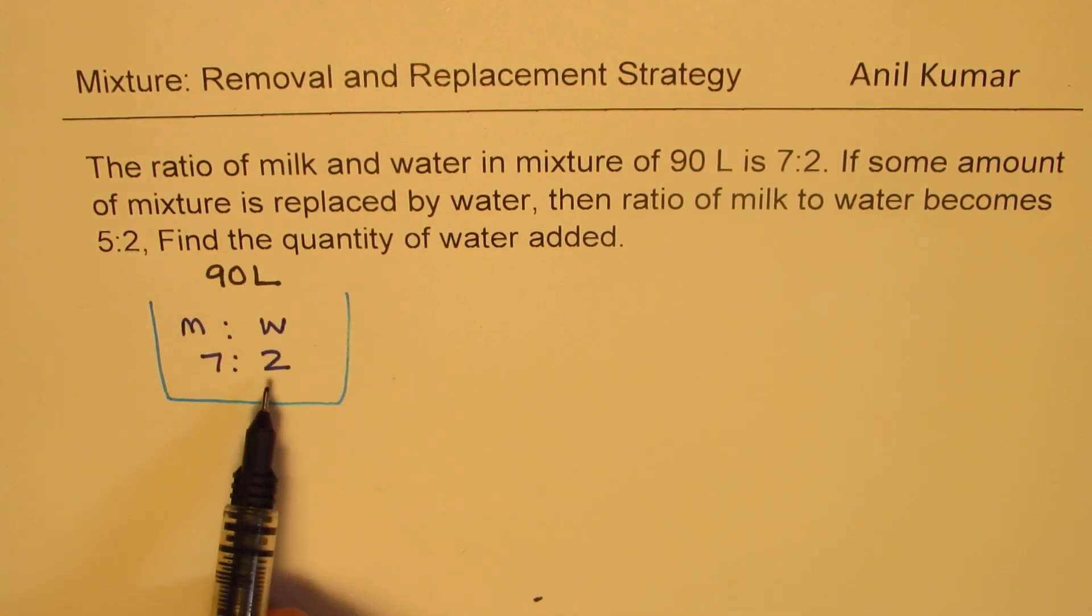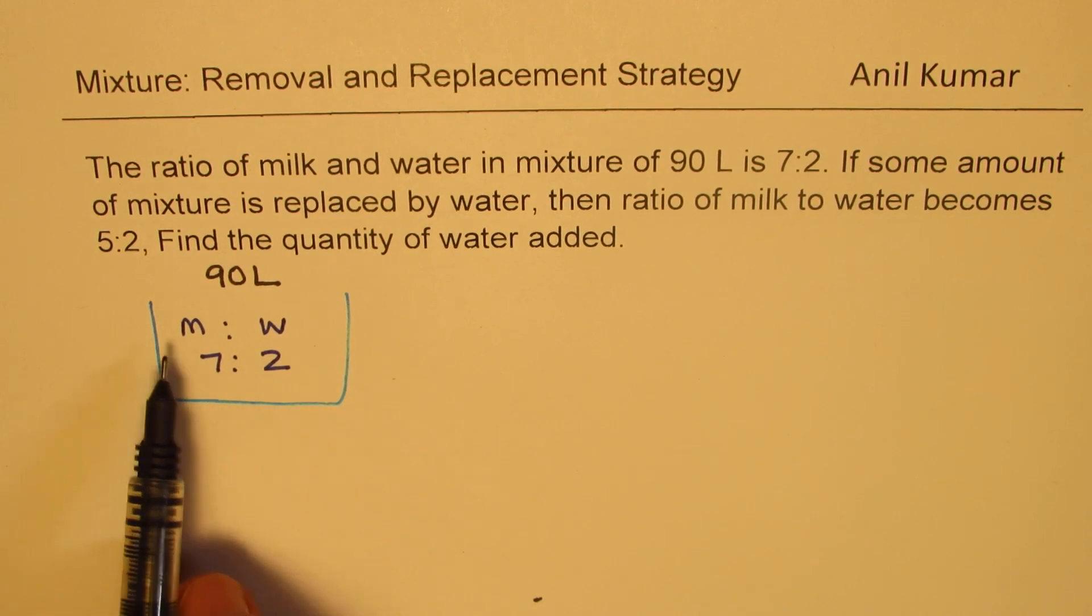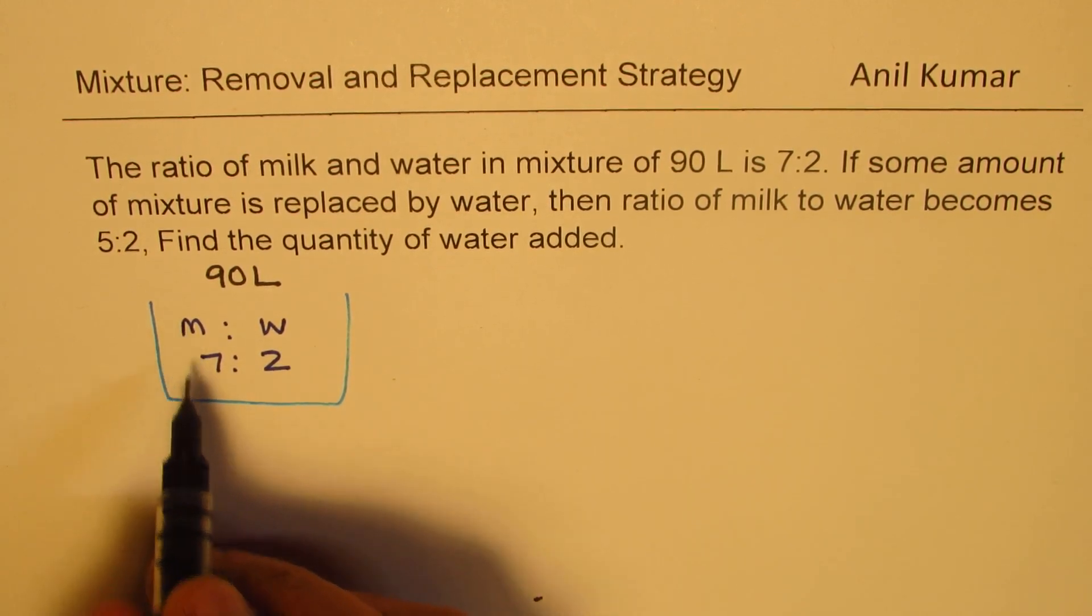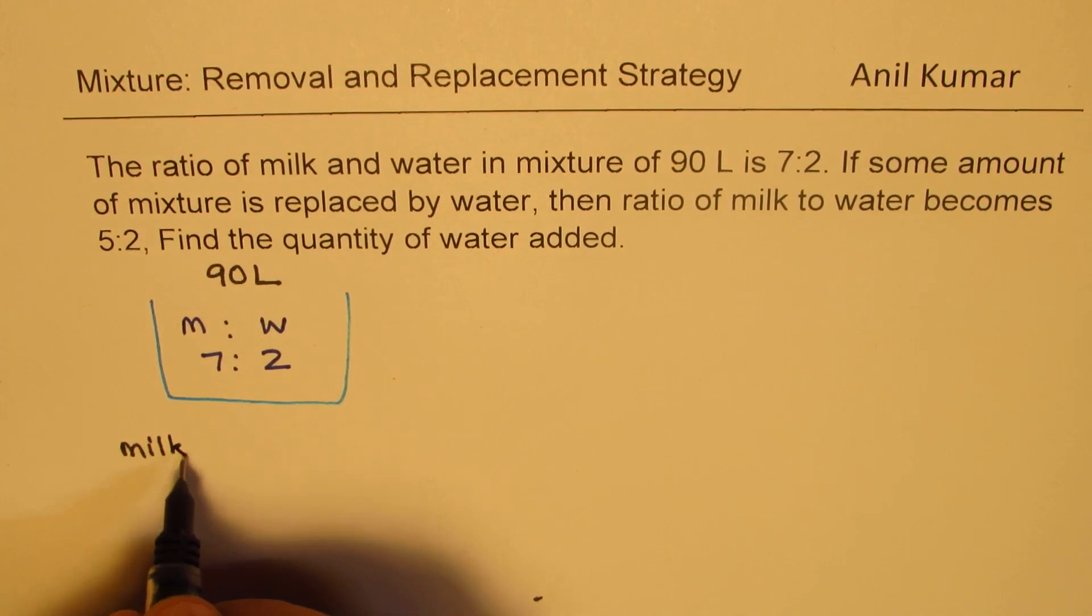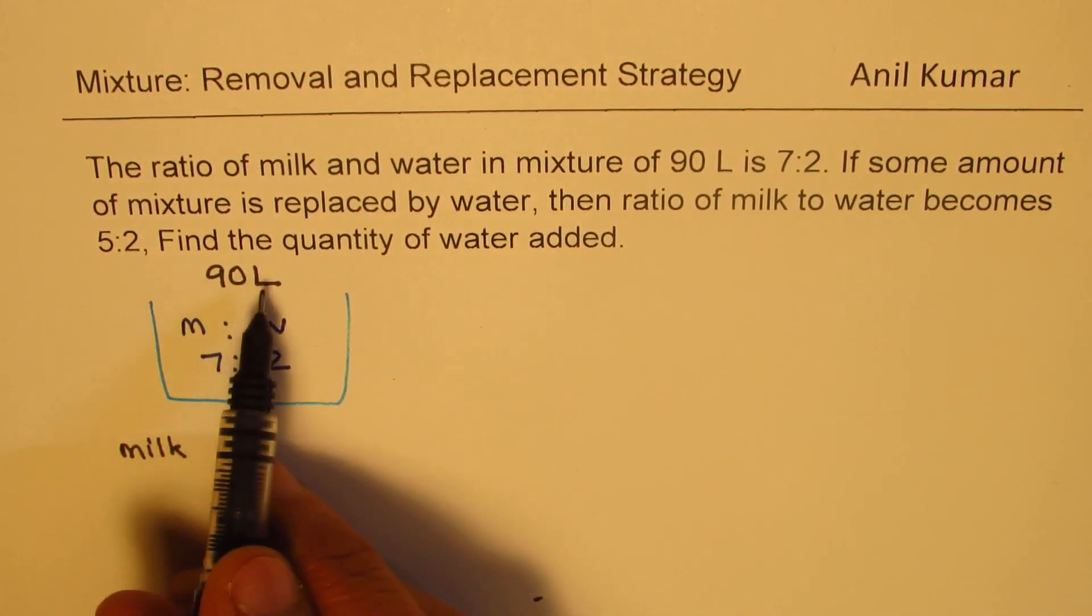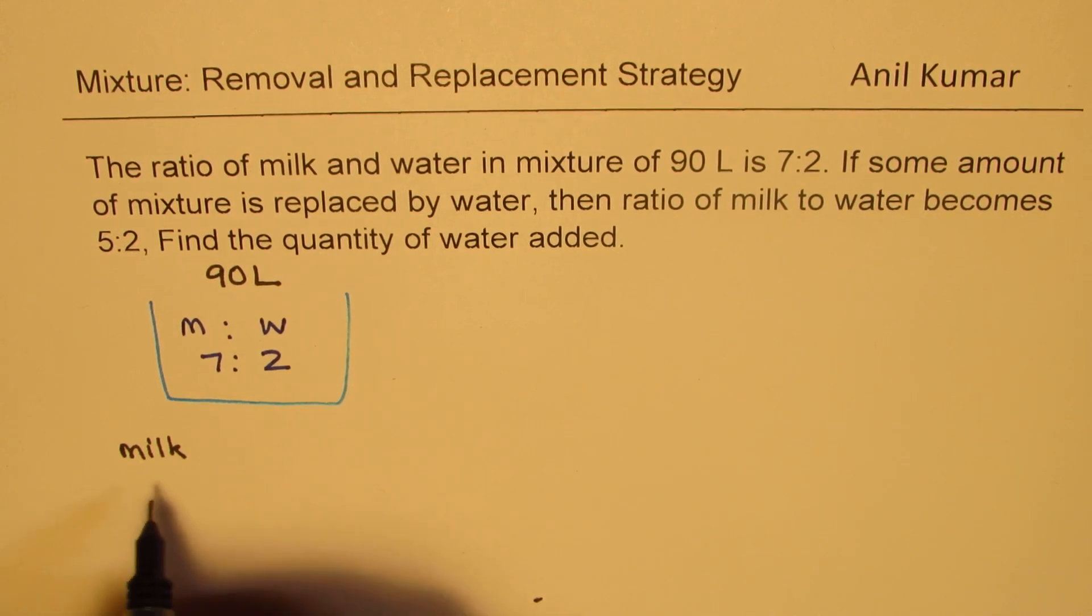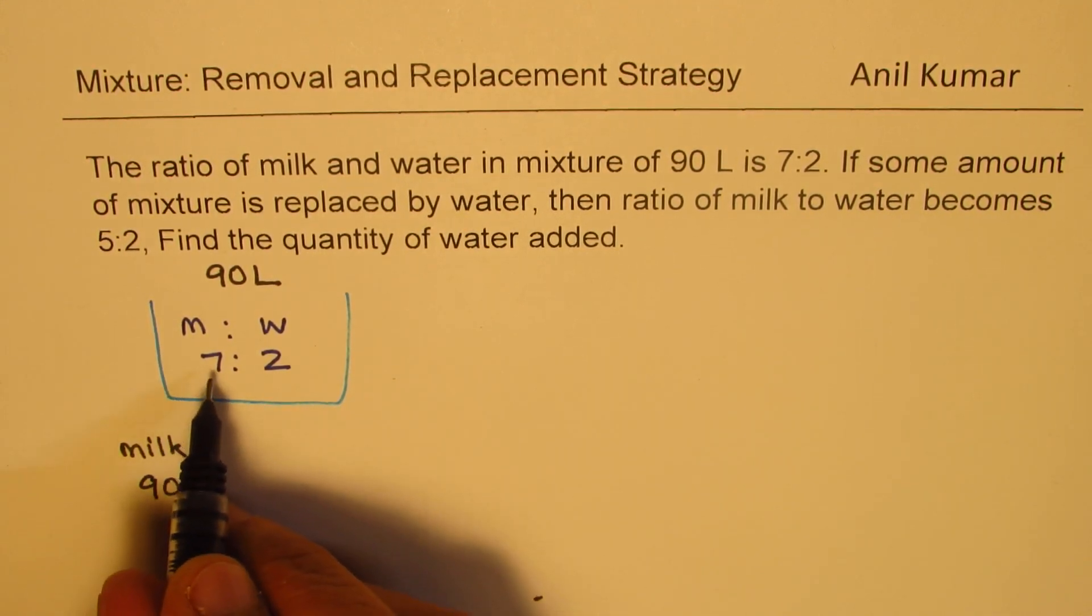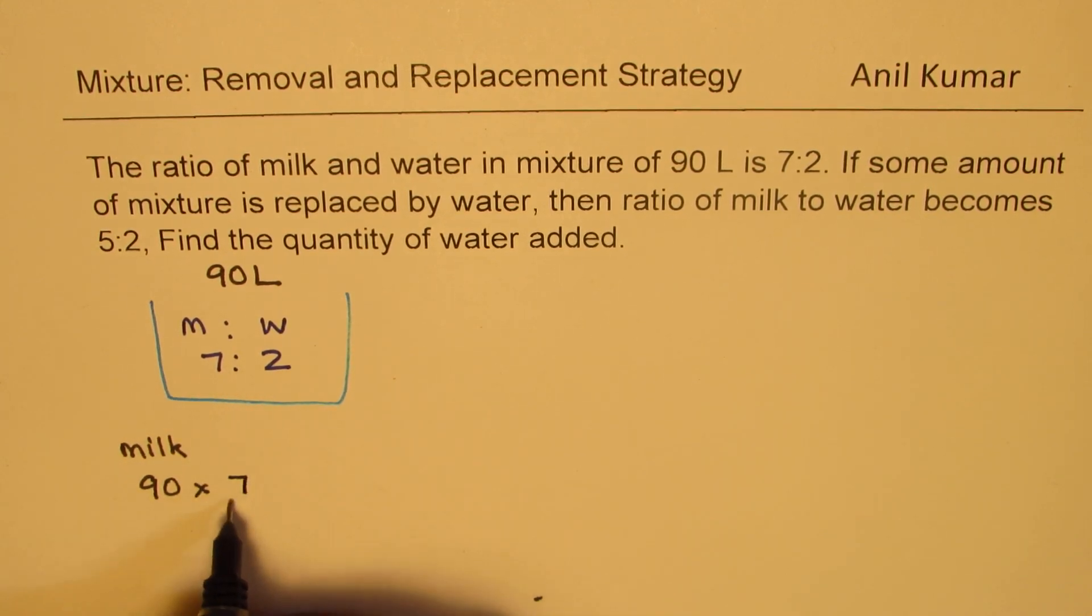Now if 7:2 is the ratio, then we can work on milk. How much milk do we have? The milk will be 7 out of 9 of 90 litres. That means 7 out of 9, which gives you a quantity of 70. So that much is the milk.